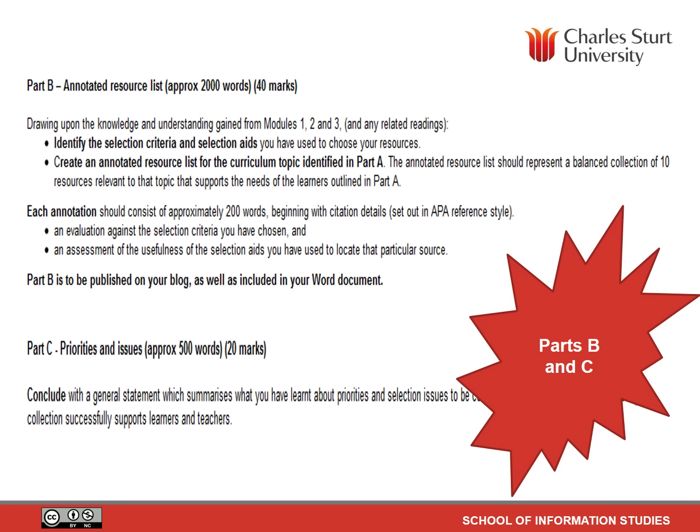The last part is your Thinkspace blog reflection — priorities and issues, 500 words. You conclude with a general statement that summarises what you've learnt about priorities and selection issues to be considered in ensuring a school library collection successfully supports learners and teachers. You post that to your Thinkspace blog.